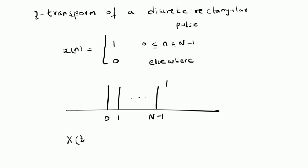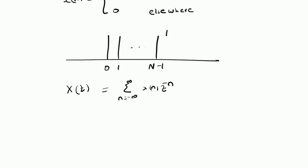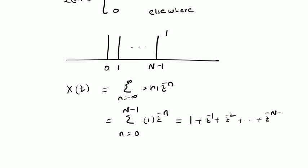By using the definition, X of Z will be equal to the sum from n equals minus infinity to plus infinity of x of n times Z power minus n. Since we have values only from 0 to N minus 1, the summation is only from n equal to 0 to N minus 1, with x of n equal to 1 and we have Z power minus n. So clearly this Z transform is equal to 1 plus Z inverse plus Z power minus 2 plus and so on up to Z power minus N minus 1.